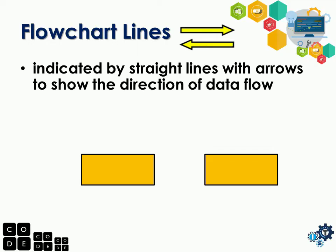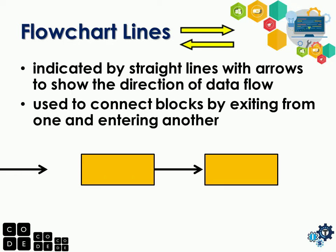Flowlines are indicated by a straight line with an arrow to show the direction of data. Basically, flowlines are lines with an arrowhead to show the direction or the next step the data will go to. They are used to connect blocks by exiting from one and entering another. That is an example of a flowline.